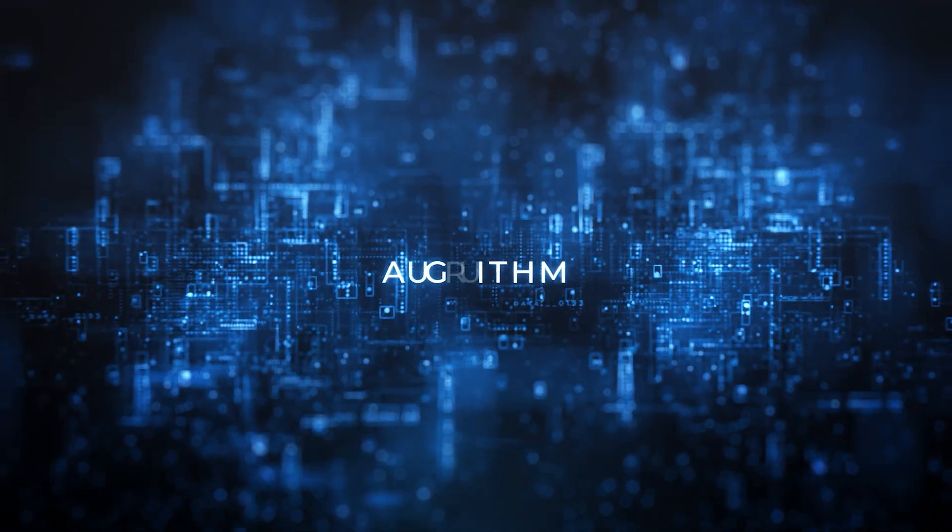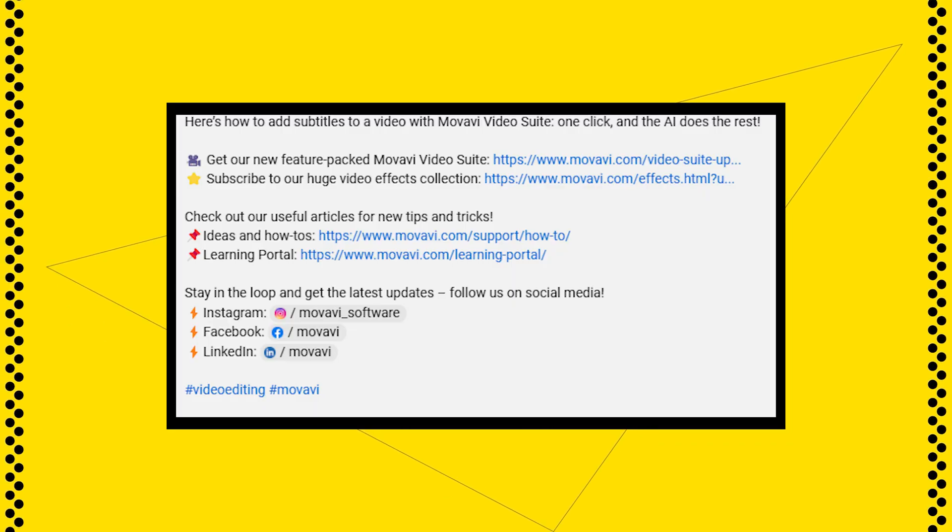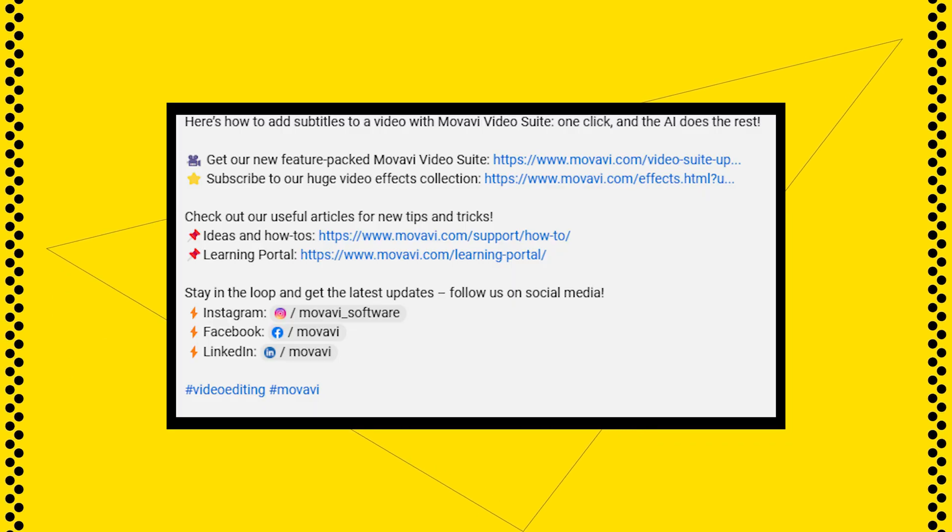For YouTube, go all out in your descriptions. Think of this space as both a summary and a search engine magnet. Use relevant keywords that help YouTube's algorithm understand your video and put it in front of the right audience. In those first few lines, drop a call to action — something specific that guides viewers to engage, like asking them to comment or subscribe. YouTube allows up to 5,000 characters, so make that space work for you. Add links to any related resources, include timestamps for easy navigation, and keep it clean and skimmable.